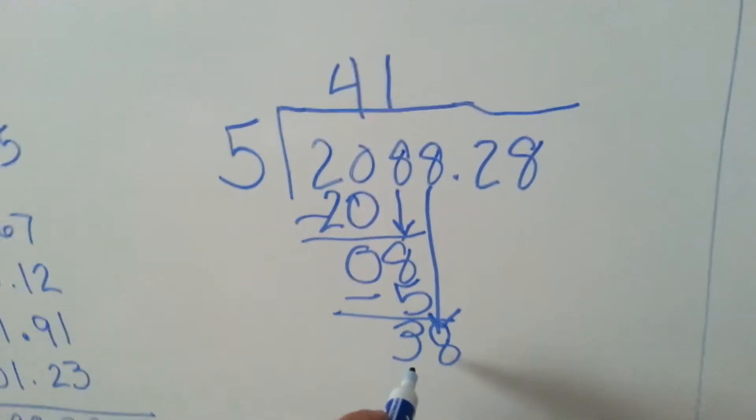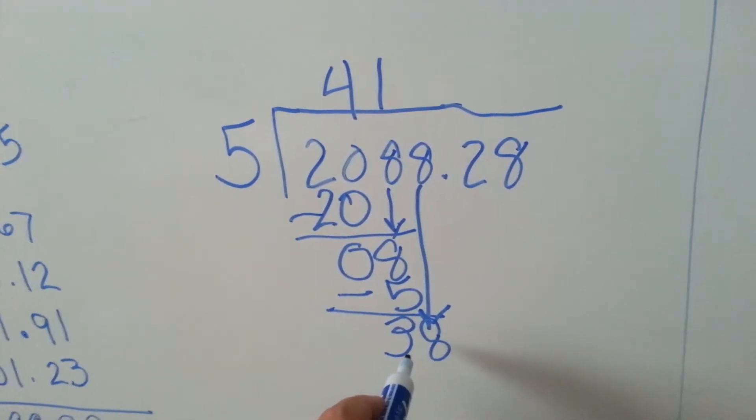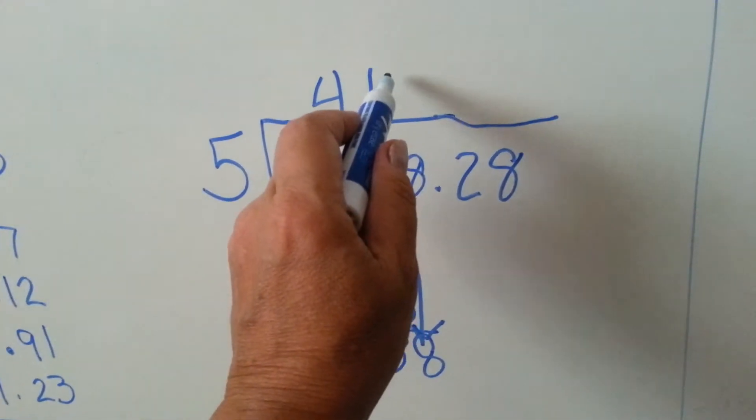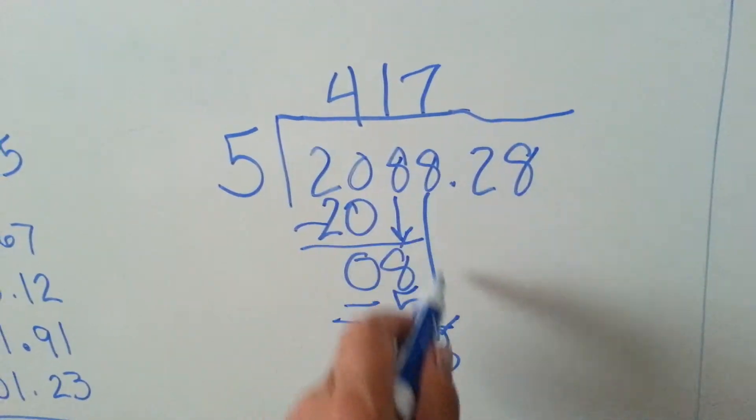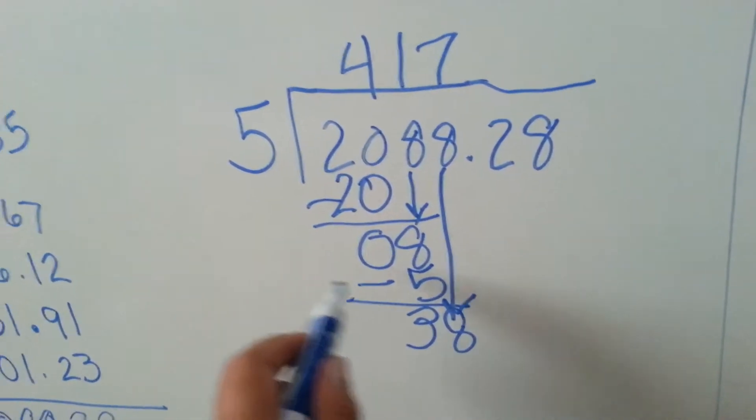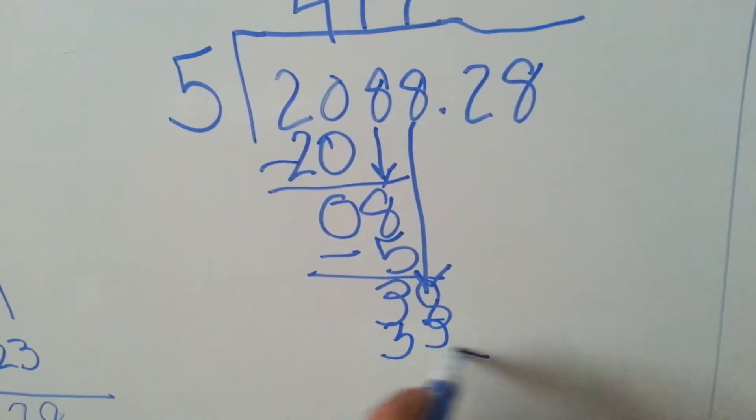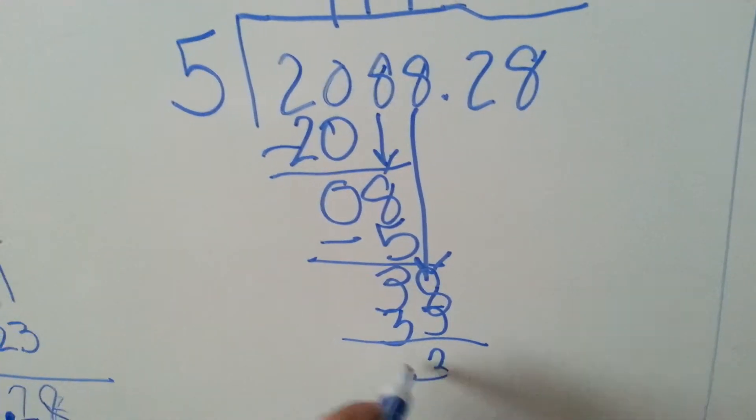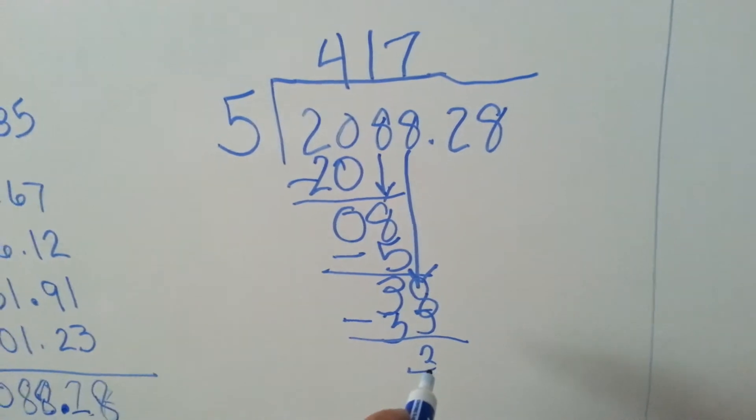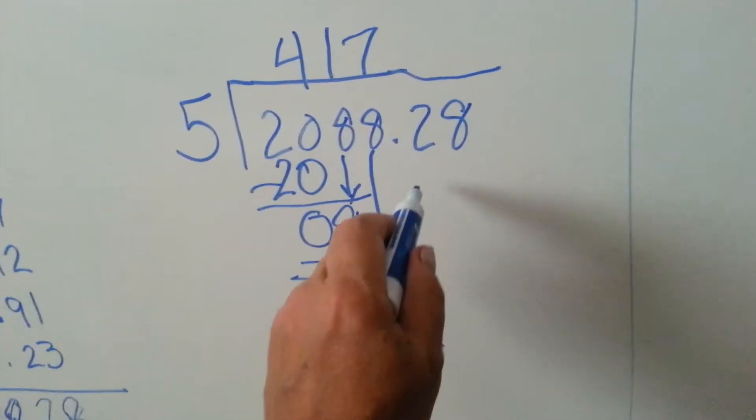Can 5 go into 38? Yes it can. 5 times 7 is 35. So we're going to put the 7 above that 8 that we brought down. 5 times 7 is 35. We're going to do our subtraction, and get 3. Can 5 go into 3 again? No. It's this 2's turn to come down.